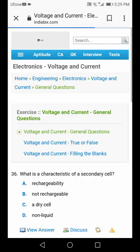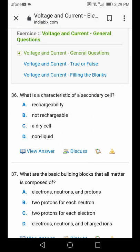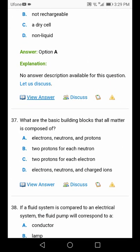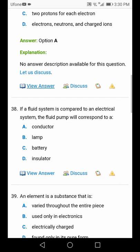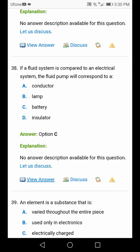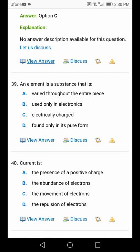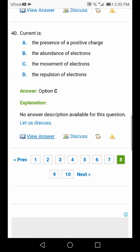Page number 8: What is the characteristic of secondary cell? It is rechargeable, option A. What are the basic building blocks that all matter is composed of? Electrons, protons, and neutrons. Fluid pump corresponds to battery in electrical system, option C. An element is a substance in purest form. Current is the movement of electrons.